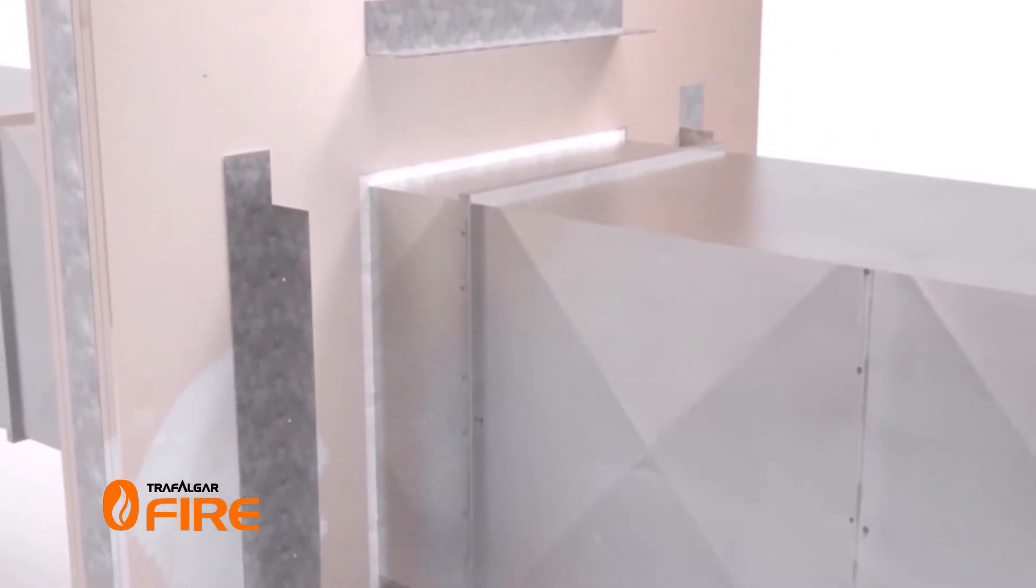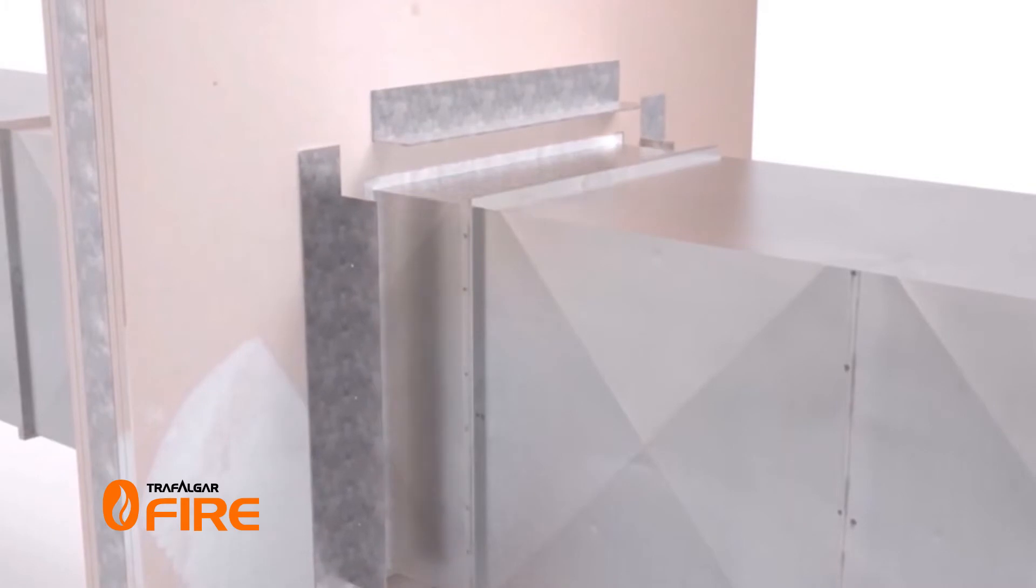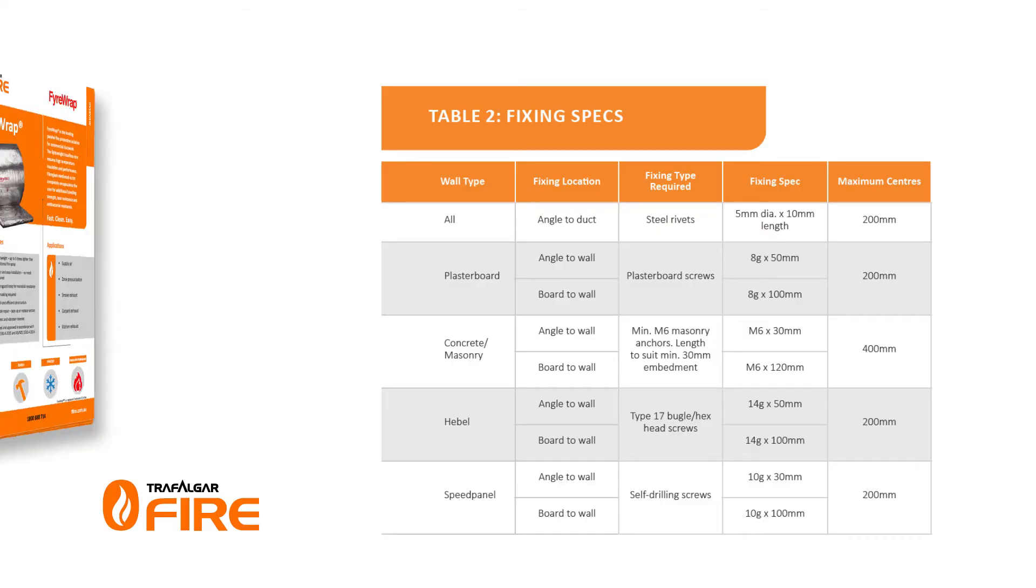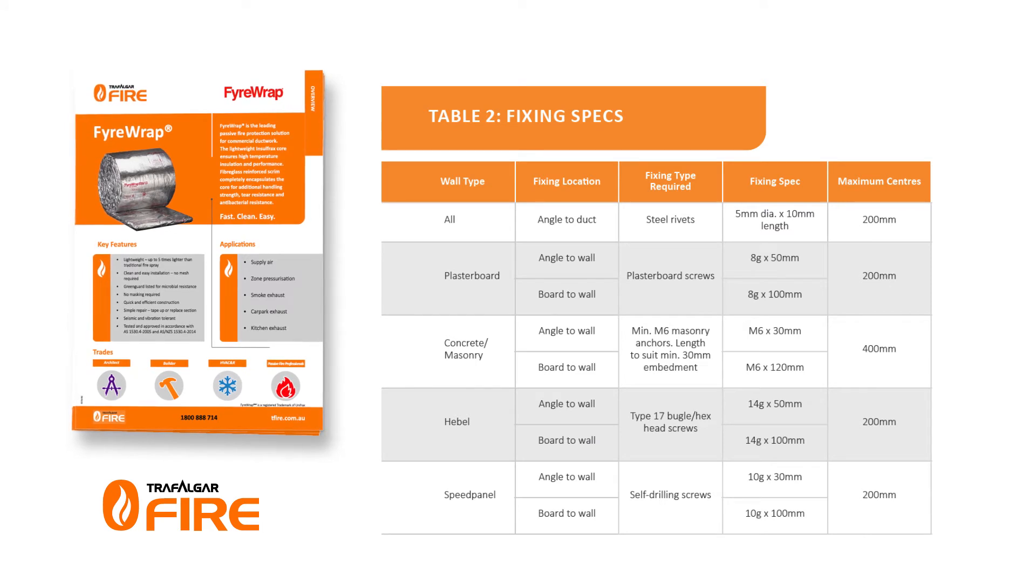Secure the duct to the wall using steel angles. The correct size angles and approved fixings can be found in table 2 of the Firewrap technical manual.